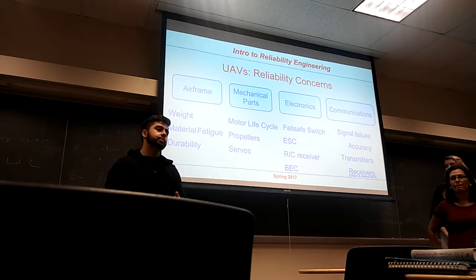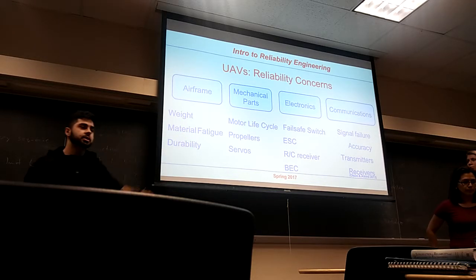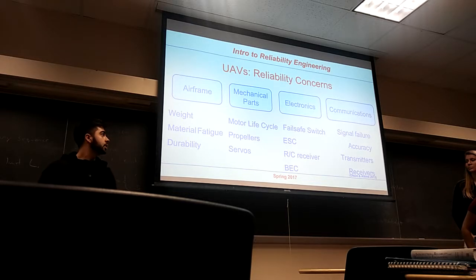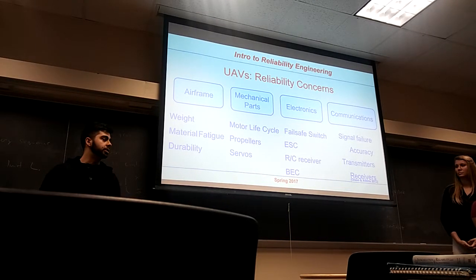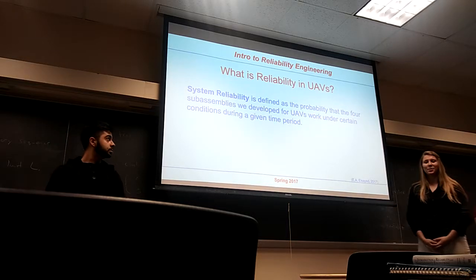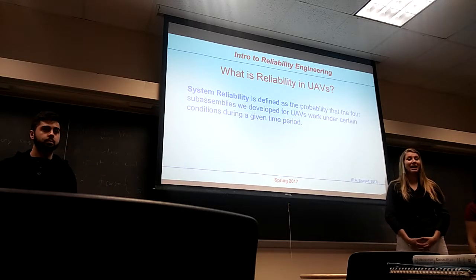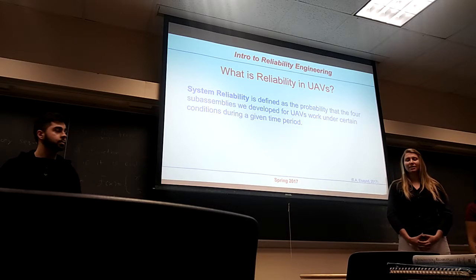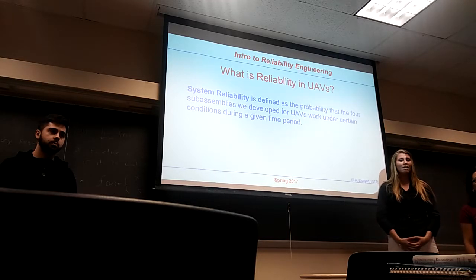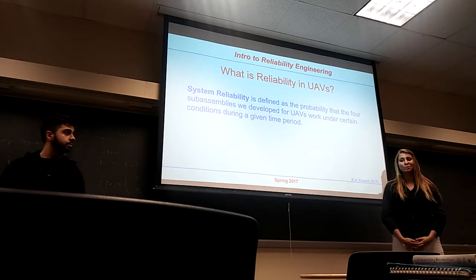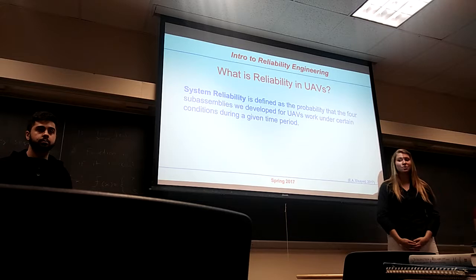We took the drone system and broke it down into four main sub-assemblies: the airframe, mechanical parts, electronics, and communications. Each one of these sub-assemblies is critical for the drone to function. By developing models for each sub-assembly, you can start to quantify the reliability of the overall system. We're defining reliability as the probability that a mission is completed at a given time. This includes having the airframe handle the load across a given flight path and withstand the impact of landing, mechanical and electrical components remaining in control during flight, and the communication system effectively sending instructions from the computer to the UAV.